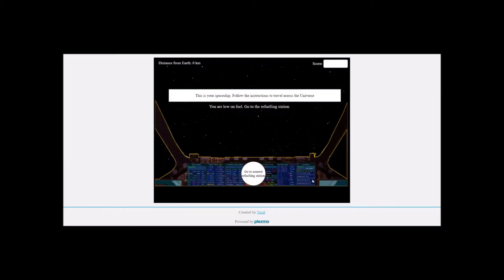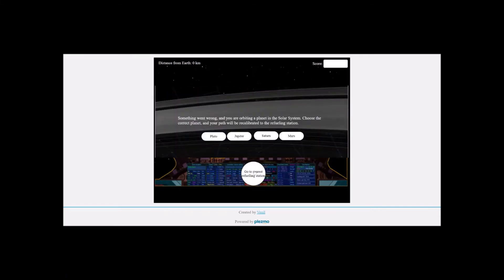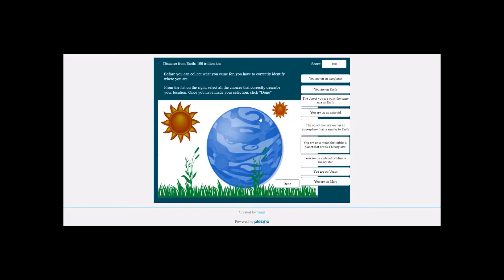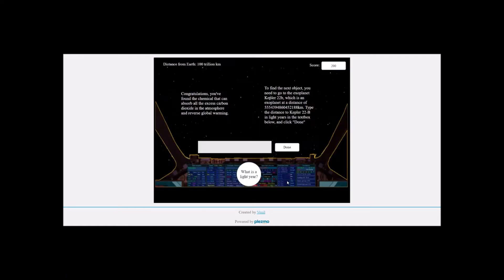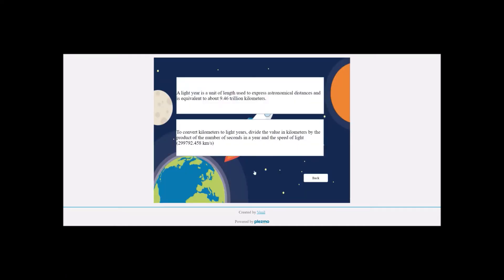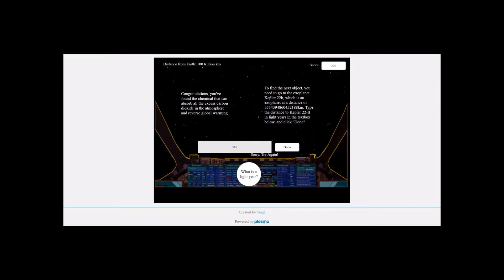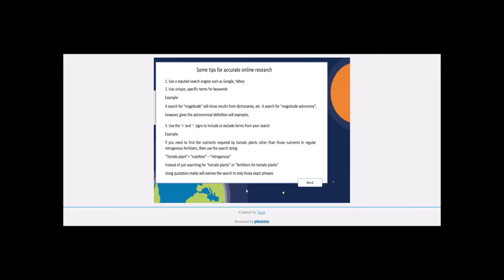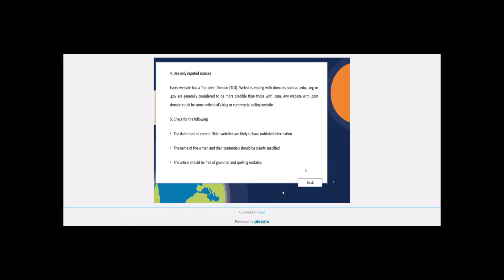The questions are about celestial bodies, and as the game progresses, the questions are about objects that are further away. Simultaneously, the complexity also increases. In one question, the player can refer to what a light year is and use it to do a calculation. In another question, the player can use the internet to find the correct answer. Tips for accurate internet research are provided within the game.